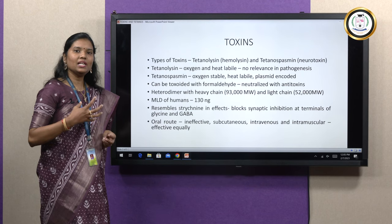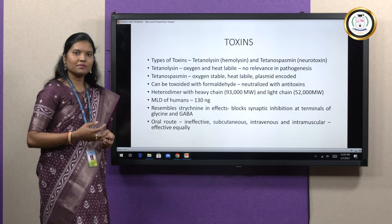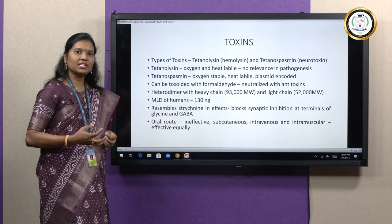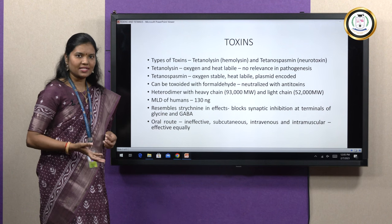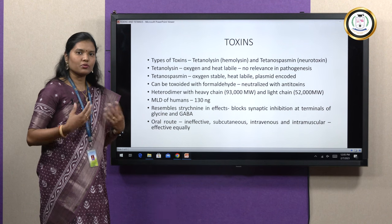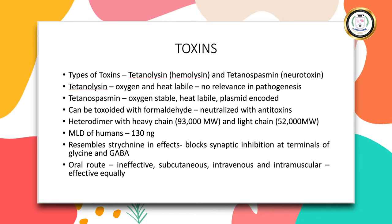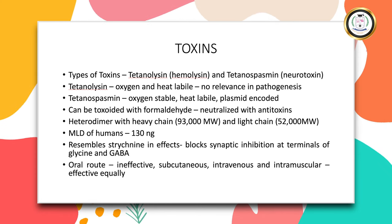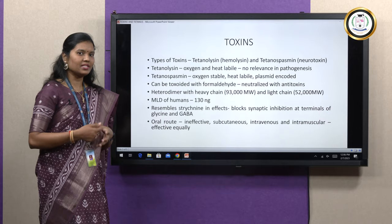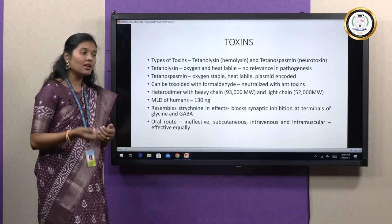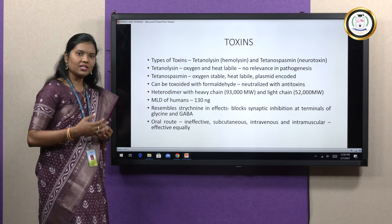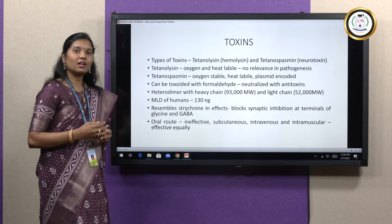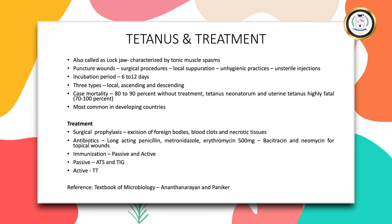This leads to tonic muscle spasm, muscle rigidity and spasticity throughout the body. If the toxin is administered through the oral route, it gets digested by digestive enzymes and is thus deactivated. However, routes such as subcutaneous, intravenous and intramuscular are equally effective.